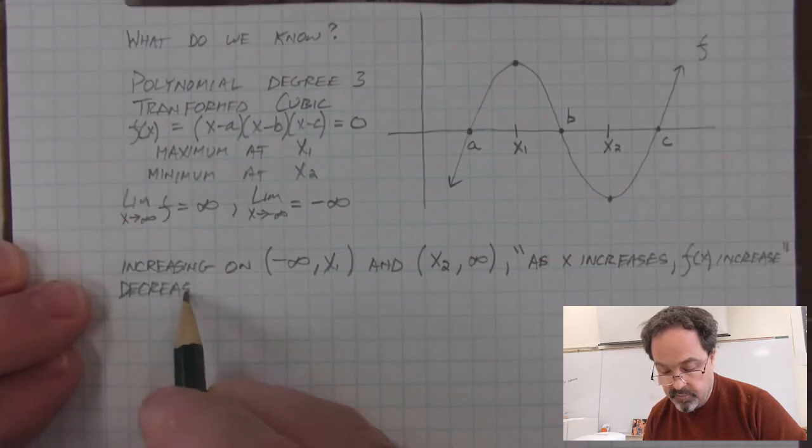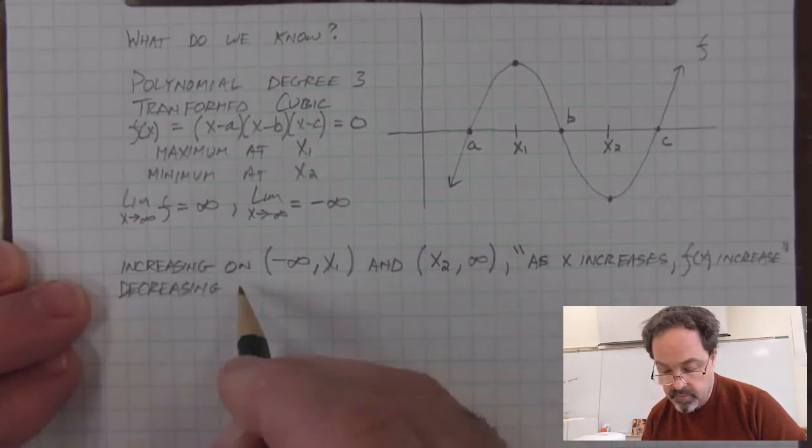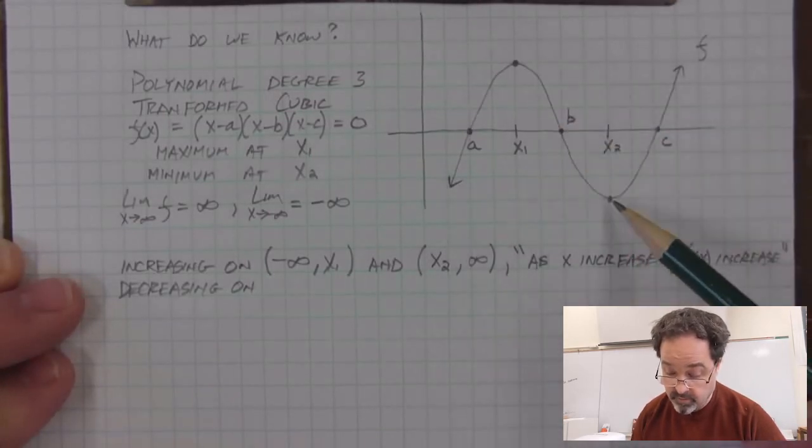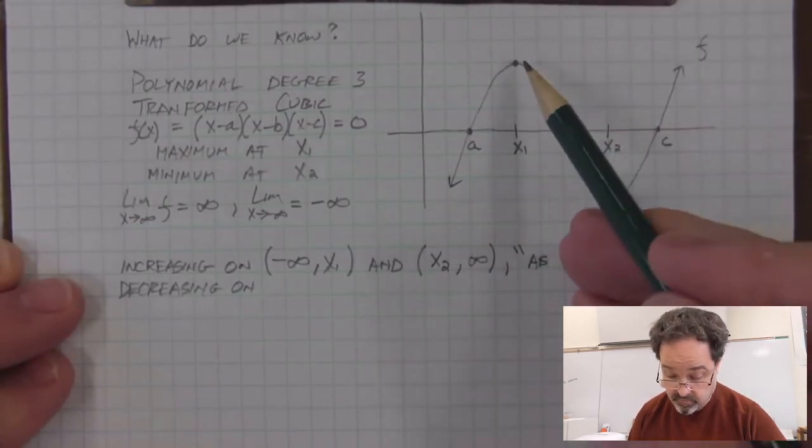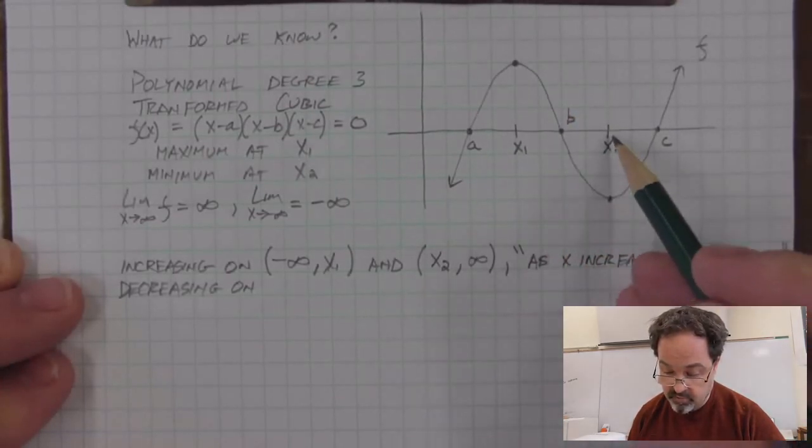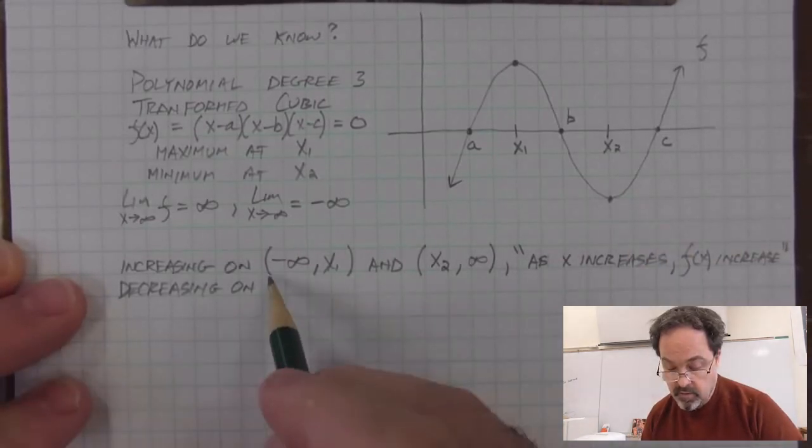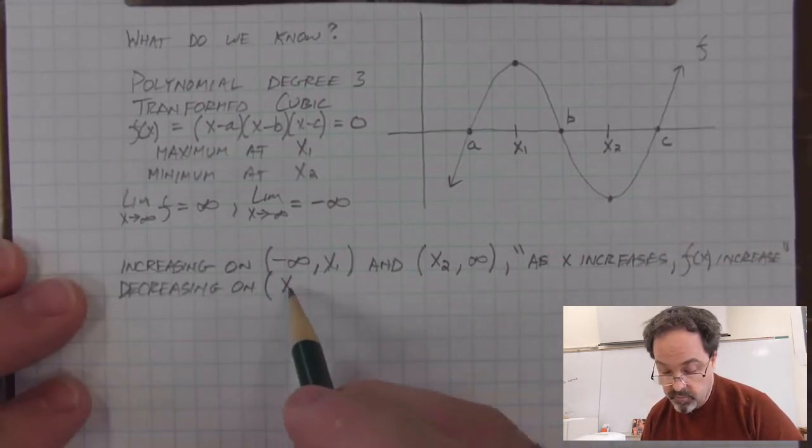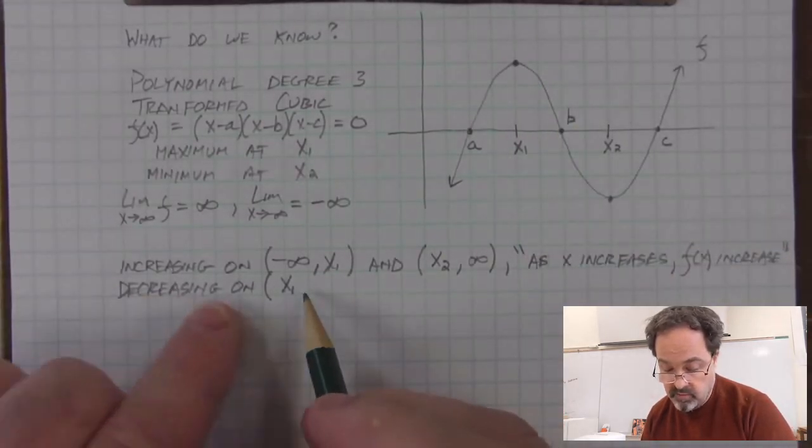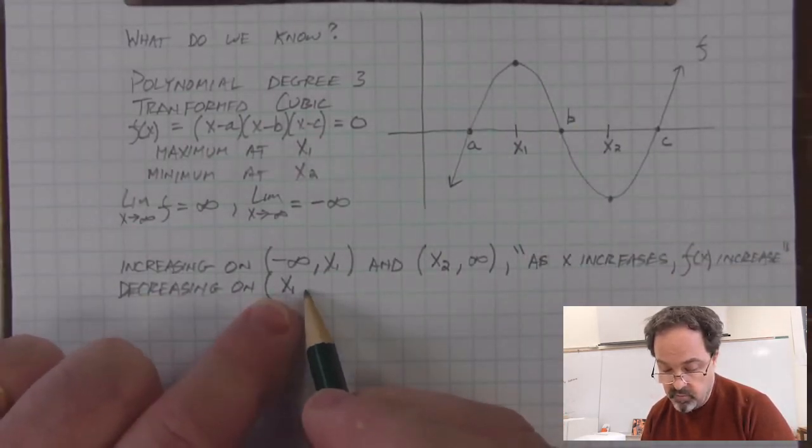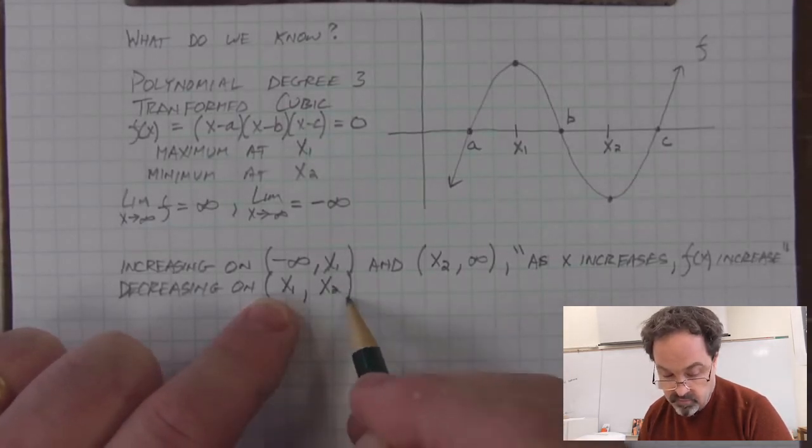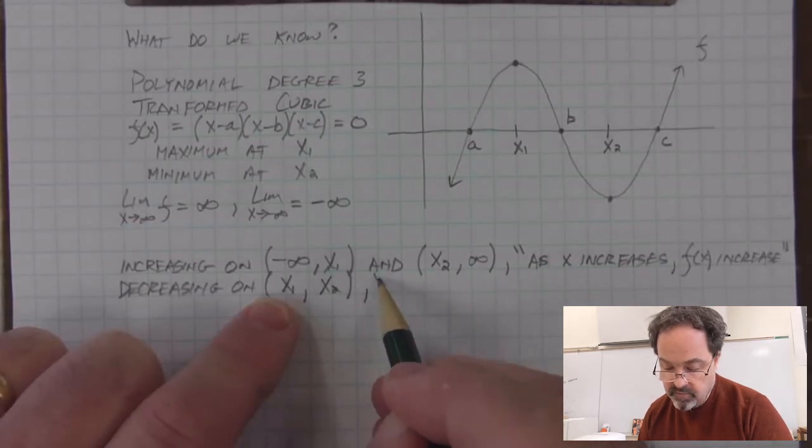What about decreasing? We could say that this function is decreasing on an interval. It's the interval where the function values are going down and that starts at x sub 1 and continues going down until we get to x sub 2. And we don't include those endpoints because it's not increasing or decreasing right at those points. So we say decreasing on the interval that starts at x sub 1 but doesn't include it and goes until x sub 2 but doesn't include it. And what do we mean by decreasing?